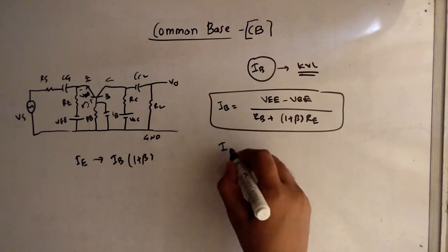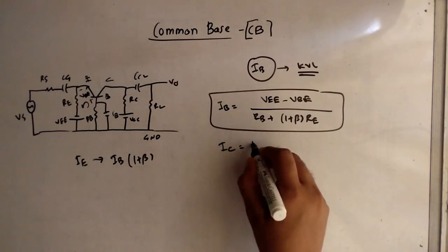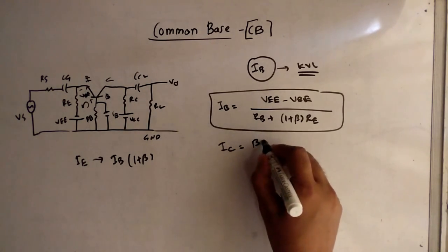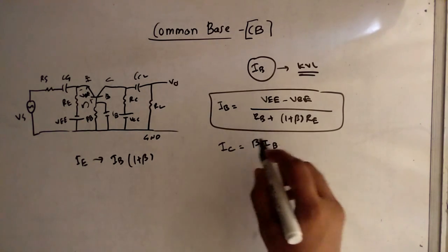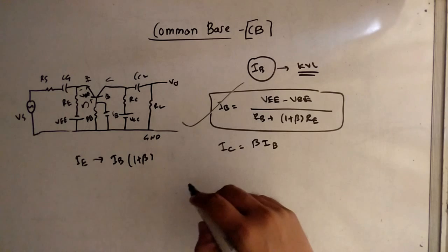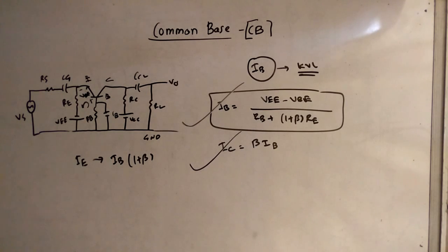Now I will find IC. IC is beta times IB. So IB is done and IC is done — DC analysis is completed.